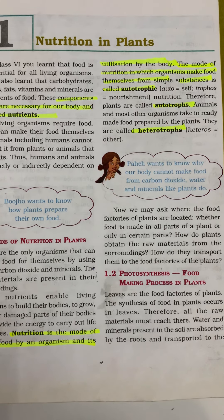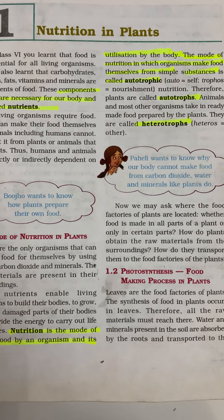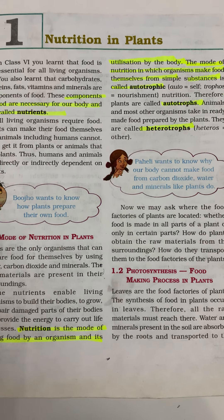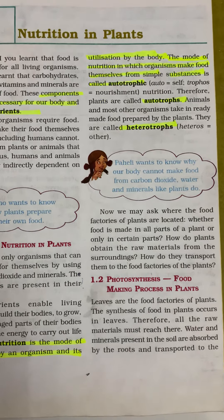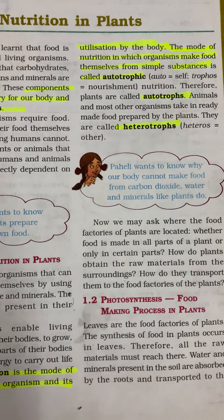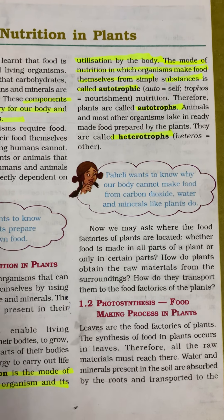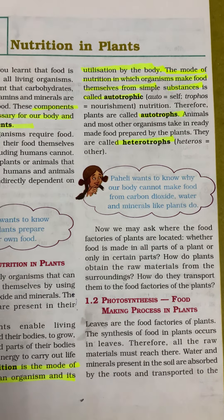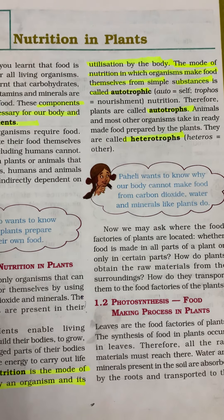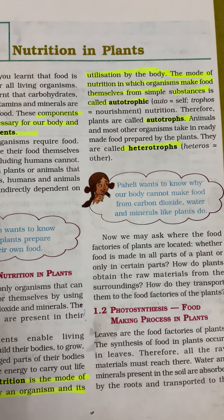When we talk of nutrition, there are two types: autotrophs and heterotrophs. As the name suggests, autotroph means self-nourishment, and heterotrophs means depending on others for their nourishment.